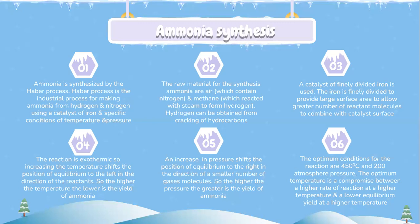An increase in pressure shifts the position of equilibrium to the right in the direction of a smaller number of gas molecules. So the higher the pressure, the greater the yield of ammonia. The optimum conditions for the reaction are 450°C and 200 atmospheres pressure. The optimal temperature is a compromise between a higher rate of reaction at higher temperature and a lower equilibrium yield at higher temperature.